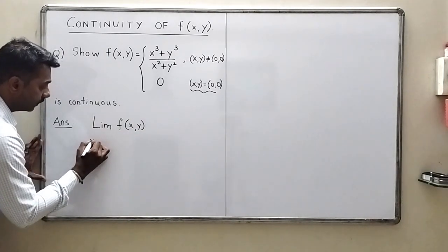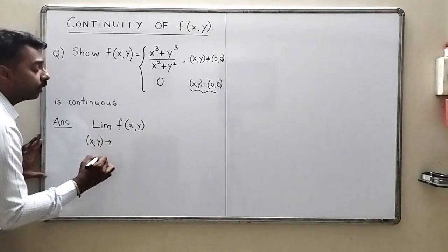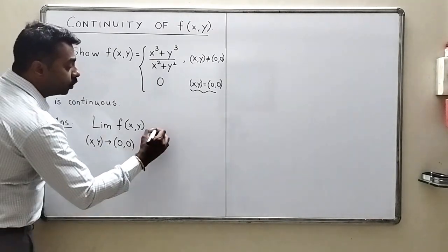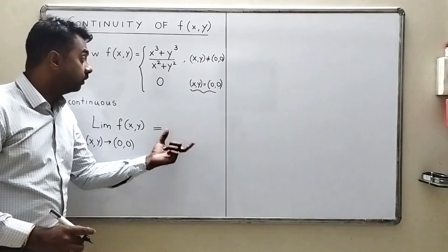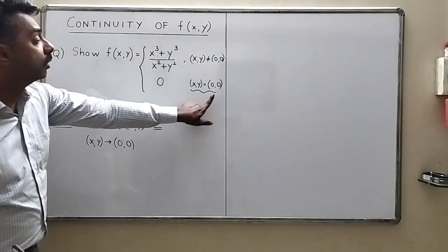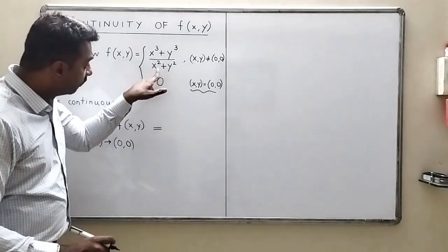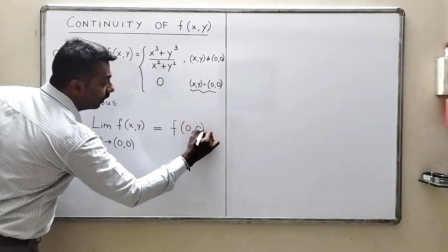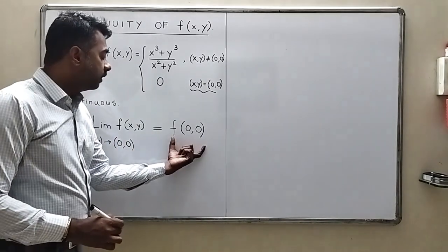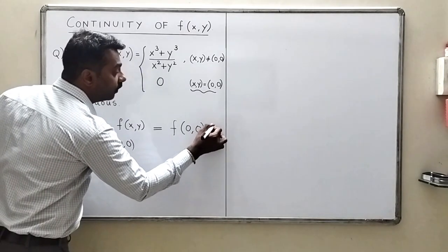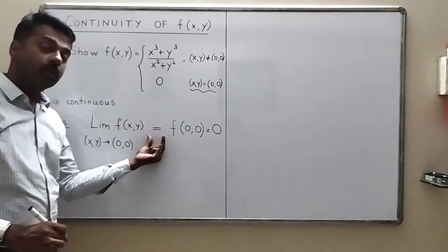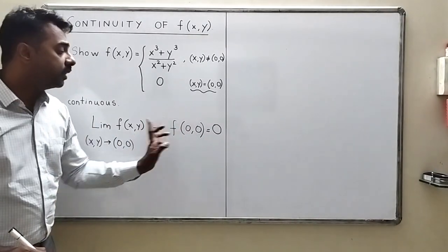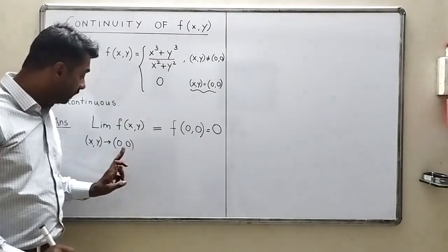For a continuous function, the limit of the function at the point zero zero should be equal to the value of the function at that point. The value of f(0,0) is given to be zero. So we have to prove that the limit of the function as (x,y) tends to (0,0) equals zero, which would confirm continuity at zero zero.